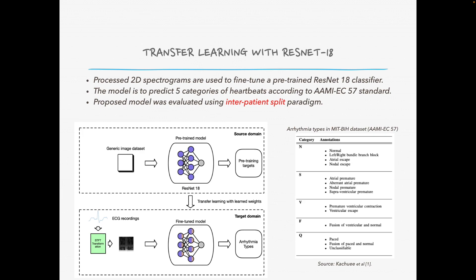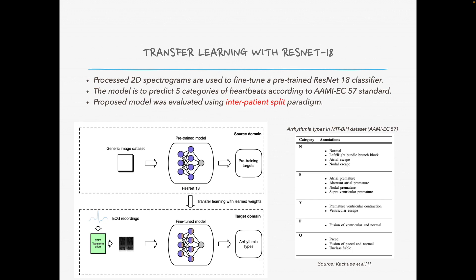Transfer learning with ResNet-18. The pre-processed 2D spectrums are used to fine-tune a pre-trained ResNet-18 classifier. This classifier is set to predict 5 different heartbeat types according to the AAMI standard. In the original MIT-BIH dataset, there are over 14 different heartbeat annotations. Those annotations are later grouped into 5 large categories according to the AAMI standard, as shown in this table. The N category is a normal heartbeat, and the remaining 4 classes are arrhythmia types. The proposed classifier is evaluated using the inter-patient split paradigm.